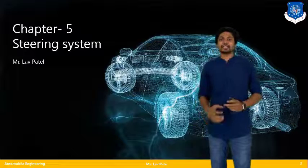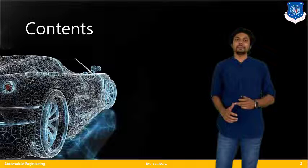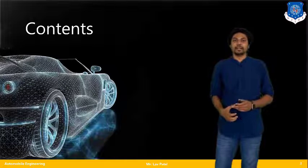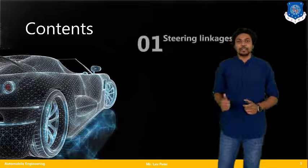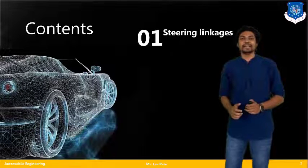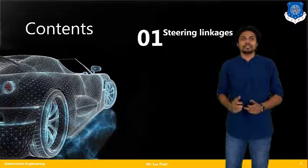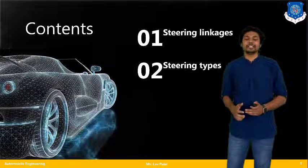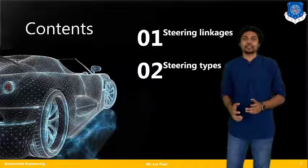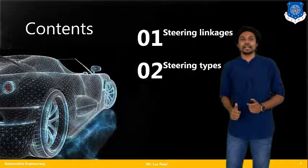So previously we have studied about what is meant by a steering system and how the steering system is going to affect, or how we are going to implement that system in our cars. In today's lecture we will see the different steering linkages connected with our steering gearboxes and steering wheel, and also the different steering types and how those steering types affect overall driving and running conditions.